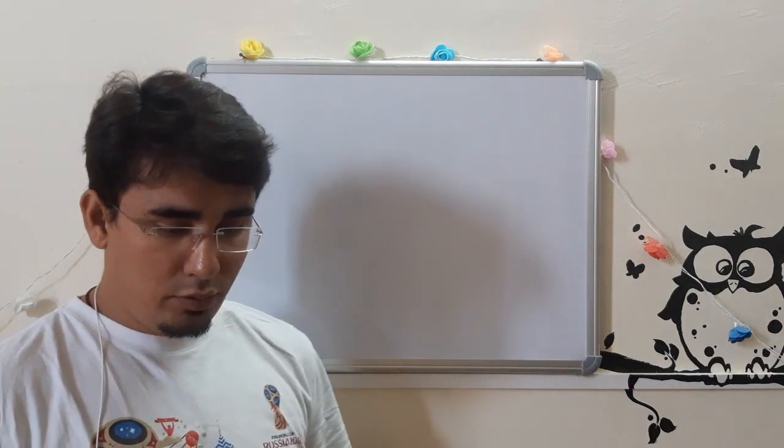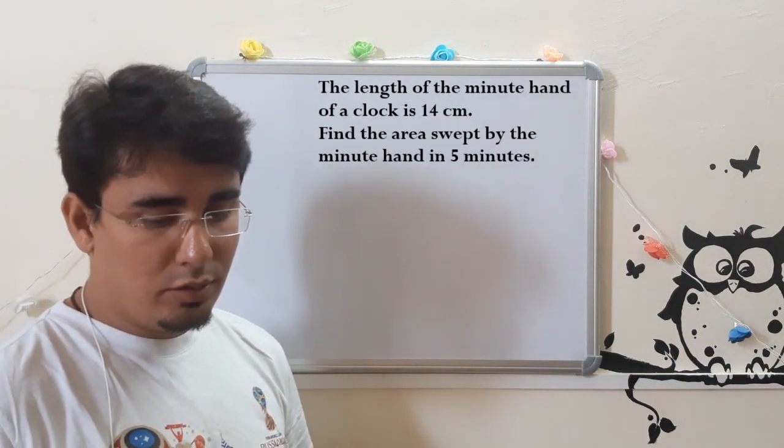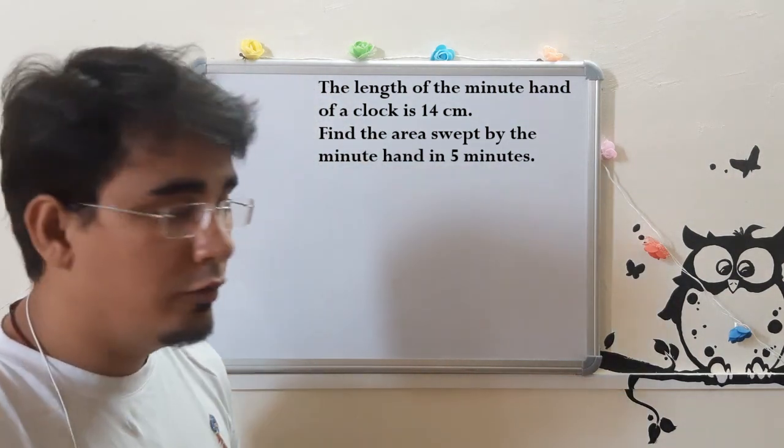The length of the minute hand of a clock is 14 cm. Find the area swept by the minute hand in 5 minutes.